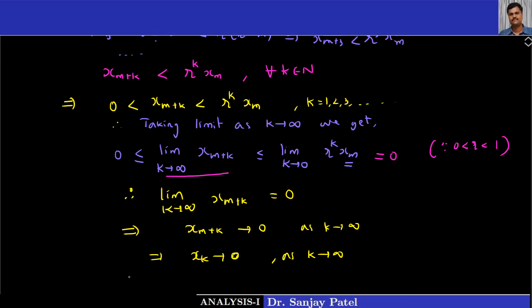We have proved that the limit as k tends to infinity of Xk is equal to 0. Hence the result is proved.